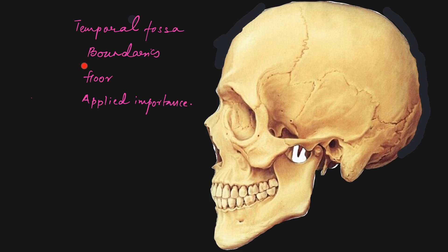Today's topic is the temporal fossa — its boundaries, floor, and applied importance. First we will see the boundaries of the temporal fossa. On the anterior side we see the zygomatic bone, the frontal bone, and the sphenoid bone. Anteriorly, this fossa is bounded by these three bones.